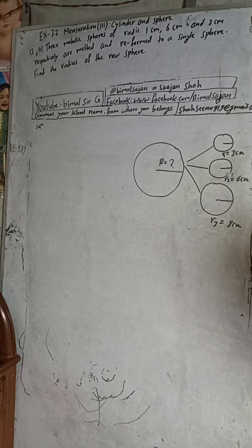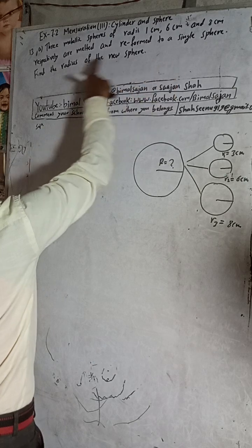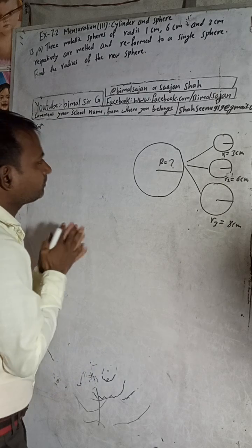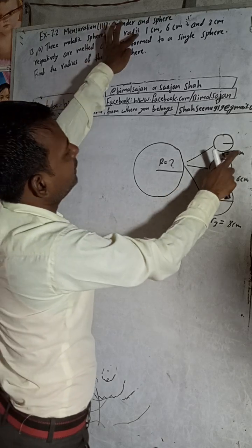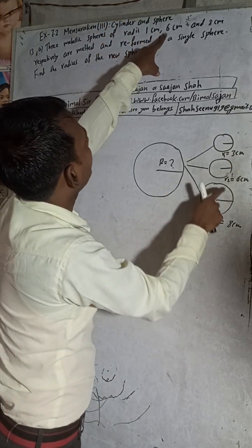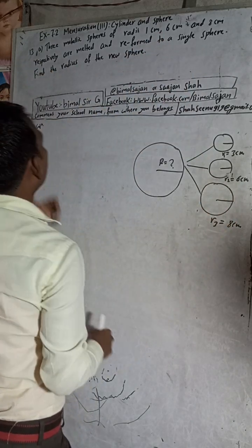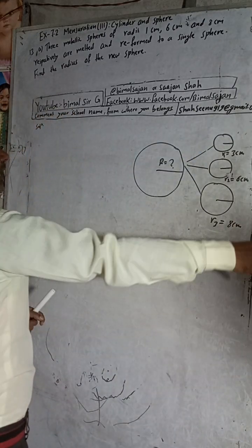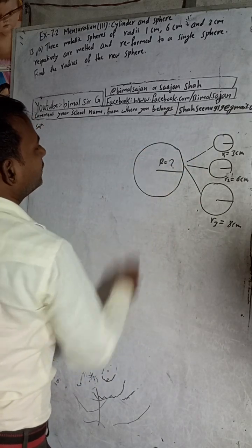Now I will start the solution. Three metallic spheres of radii 1 cm, 6 cm, and 8 cm respectively are melted and reformed to a single sphere. Find the radius of the new sphere. So there are three metallic spheres: the first has radius r1 = 1 cm, the second has radius 6 cm, and the third has radius 8 cm. When these three metallic spheres are melted and reformed into a bigger sphere, we have to find the radius of that bigger sphere.